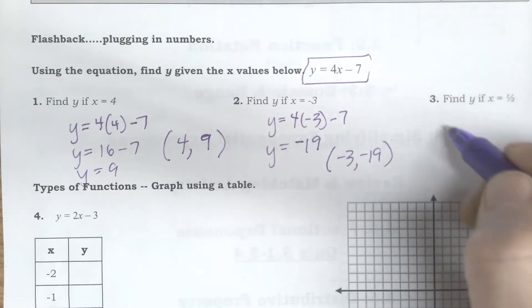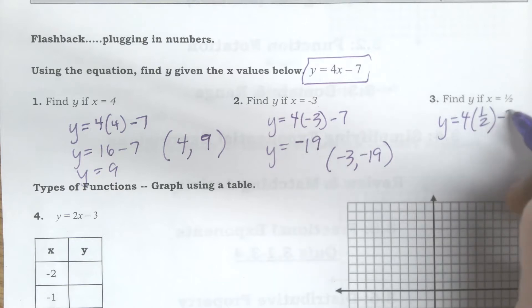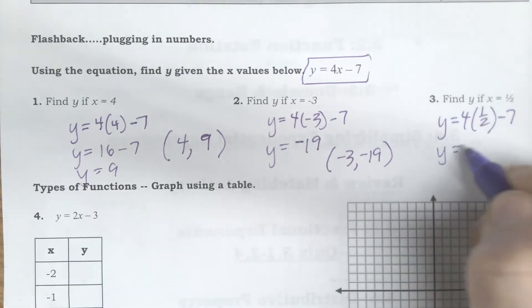If I have a fraction, remember we already talked about how to work with fractions and maybe you're comfortable with them as well, but I'm plugging in a half. It doesn't matter that it's a fraction. I still do the same stuff. Half of 4 is 2, 2 minus 7 is negative 5, so this would be the point one half comma negative 5.